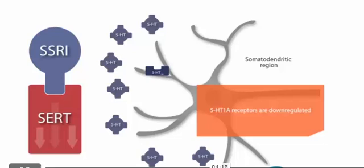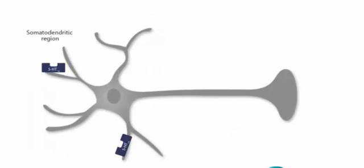Since downregulation is mediated by genomic mechanisms, the reduction of 5-HT1A receptors is not immediate. This occurs in weeks. This has been proposed as a possible explanation of antidepressants' delay in therapeutic effects.